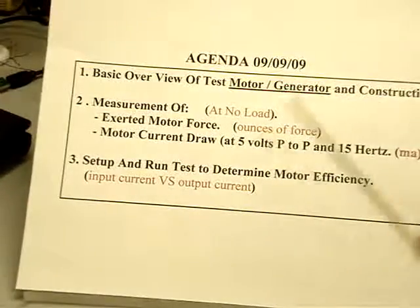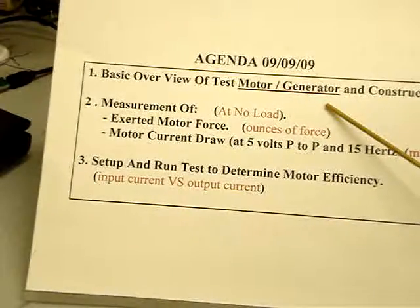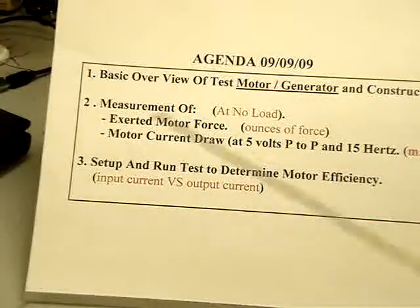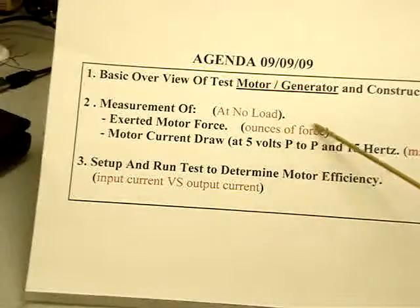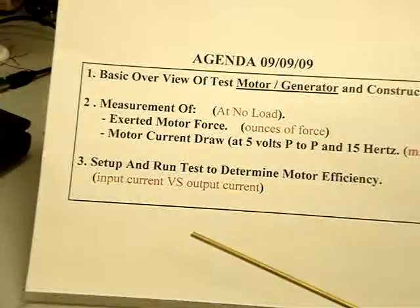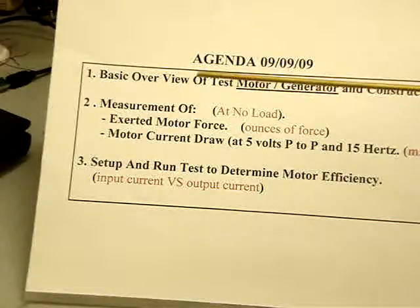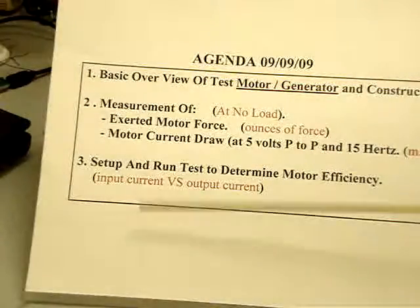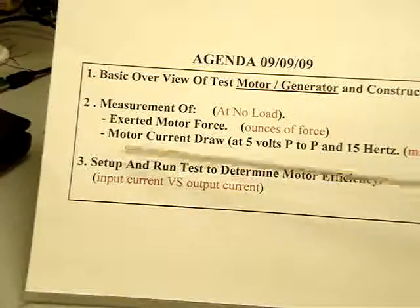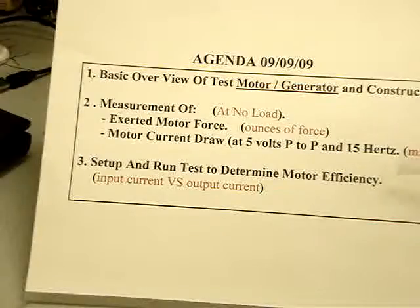So the plan is, basic overview of the motor generator in construction. This will be in the first video. Measurement of the external force, ounces of force, and that'll be the amount of force that's generated on the lever at the ferrite magnet. We probably won't use that information in our calculations, but it's good to have. And also the motor current draw at 5 volt peak to peak, 15 hertz.